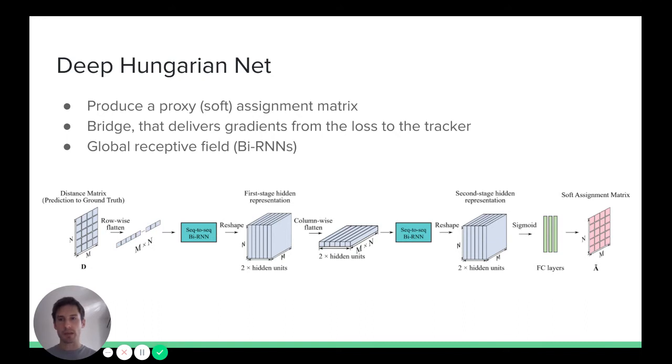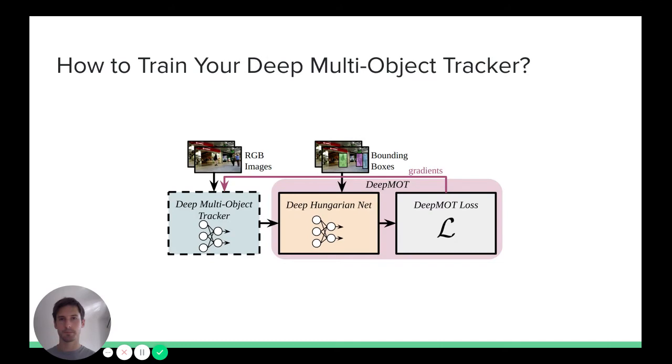To get back to the input size, we use fully connected layers along the hidden dimension and finally use sigmoid activation function to ensure that outputs are between 0 and 1. As a result, we obtain soft assignment matrix of the same size as the input distance matrix.